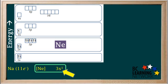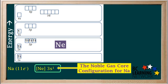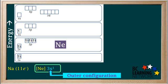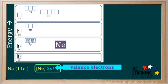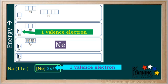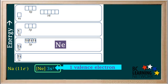So we write the noble gas core configuration for sodium as [Ne] 3s1. The [Ne] represents the 10 inner electrons in the noble gas core, and the 3s1 represents the outer electron outside the noble gas core. S and P electrons outside the noble gas core are called valence electrons. So a sodium atom is said to have one valence electron — the electron in the outer 3s orbital.